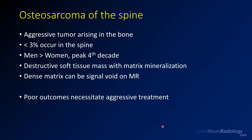In this case this is an osteosarcoma of the spine. It's an aggressive bone tumor arising from the bone itself. Osteosarcomas are more common elsewhere in the body but about three percent occur in the spine, men slightly more than women and in the fourth decade. The key features are destructive masses with soft tissue and matrix formation. On CT the matrix looks like new bone formation, but on MR it tends to look like a signal void. These are aggressive lesions that have to be aggressively managed.